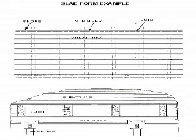Design is performed in a top-down manner. The sheathing material, which is usually lumber or ply form, is supported by the joists, so the sheathing span capacity determines the joist spacing. Likewise, the joist span capacity determines the stringer spacing, and the stringer span capacity determines the shore spacing.